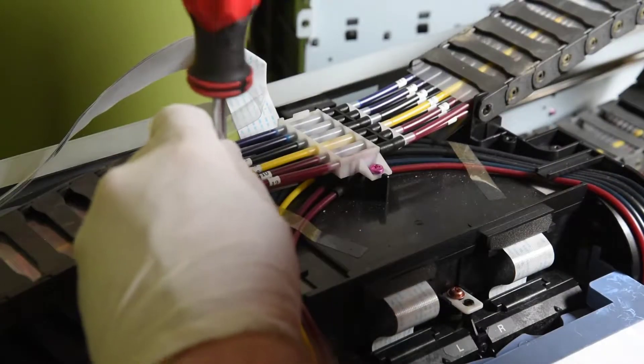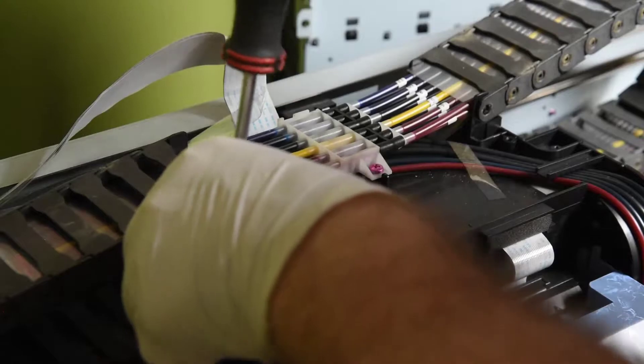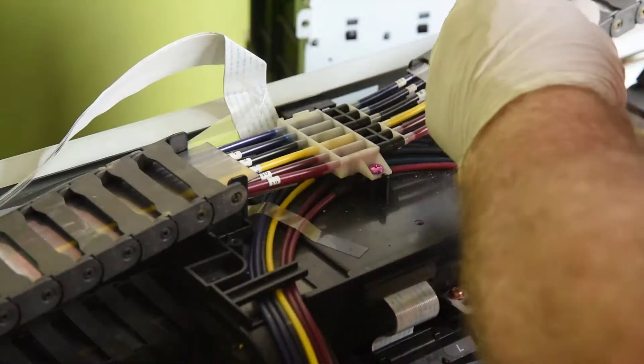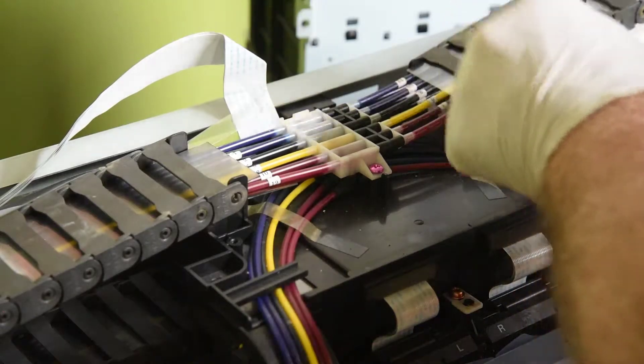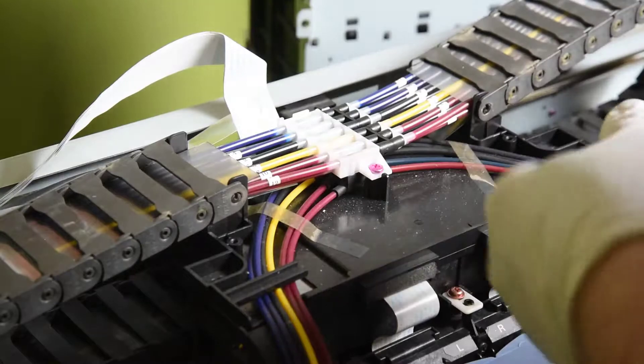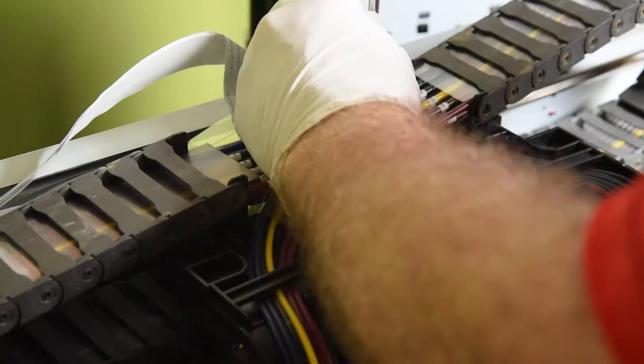Once the carriage is moved to the left enough to clear obstructions, there are four black screws that hold this bracket in place. These screws are accessible even with the bracket I previously removed in place. Hence, no need to remove that one.